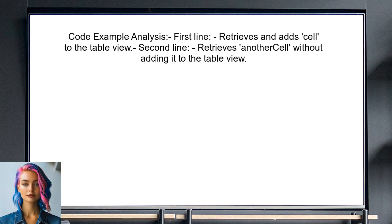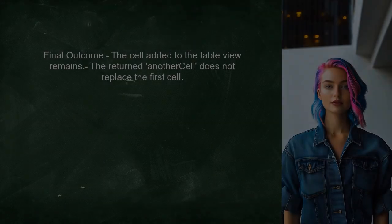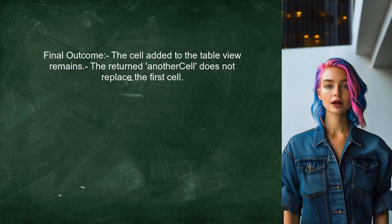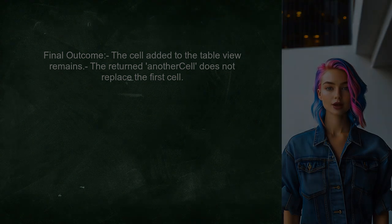However, the second line retrieves another cell without adding it to the table view. When the method returns another cell, it does not affect the cell that was already added to the table view. The cell added in the first line remains in the table view, while the other cell is simply returned.